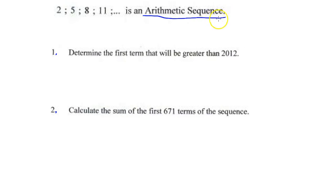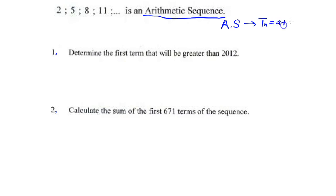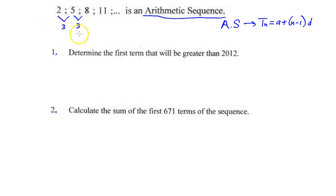For an arithmetic sequence, the first difference is constant, and the formula is tₙ = a + (n − 1) × d. Let us work out the first difference: 5 minus 2 is equal to 3, and 8 minus 5 is equal to 3. There we go — we have a constant first difference.